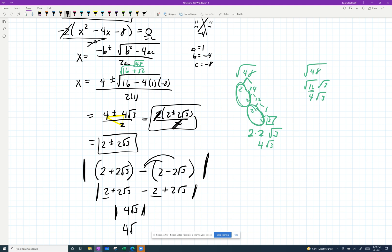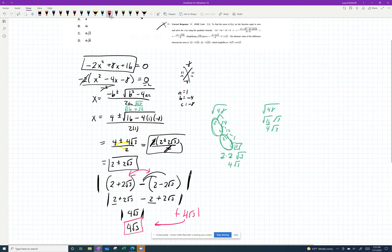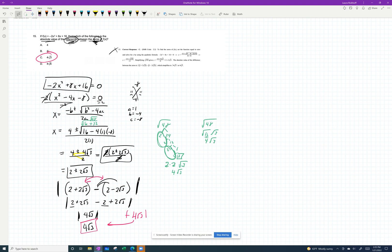They want the absolute value of the difference, which in my case is just 4 root 3, but that's them covering themselves in case you decided to subtract in a different order. You would have gotten negative 4 root 3, and then the absolute value would have made it positive. So 4 root 3 is our guide. Thankfully, we see it there, and we match their answer. Yay! Not bad.